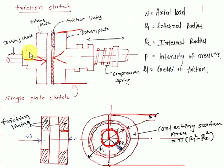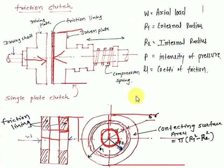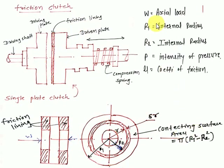The friction lining material exists only in the region between r2 and r1. In the cross-section, this is a continuous friction lining, but it is actually present only in that particular area. From the center to r2 is the inner radius, and from the center to r1 is the outer radius. p is the intensity of pressure on the plate, and mu (μ) is the coefficient of friction of the friction lining material.